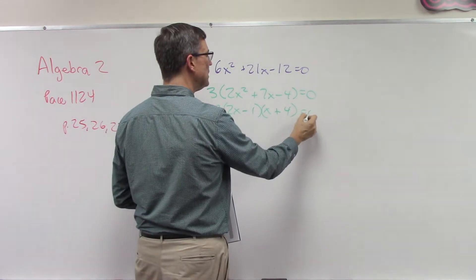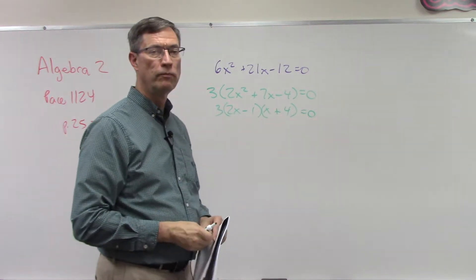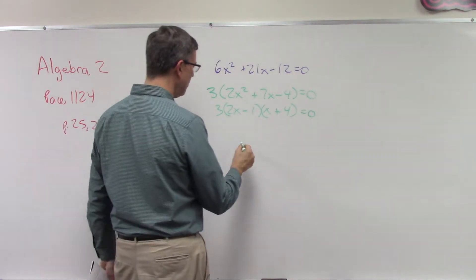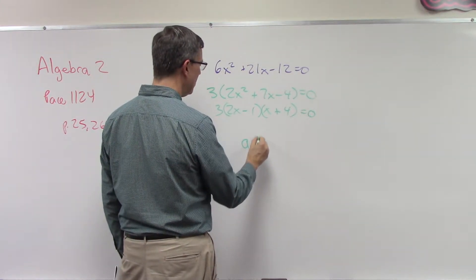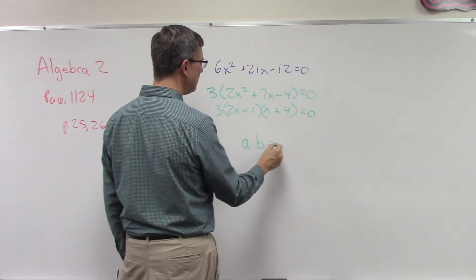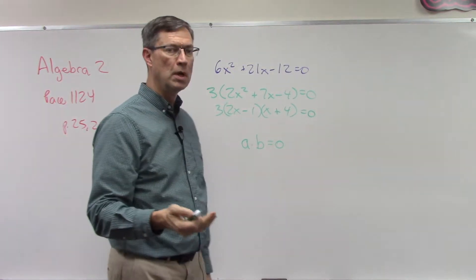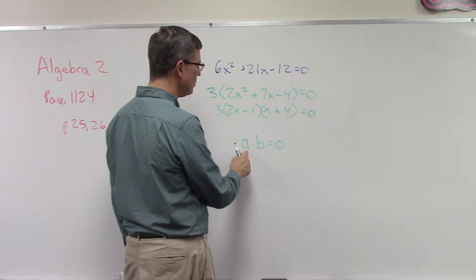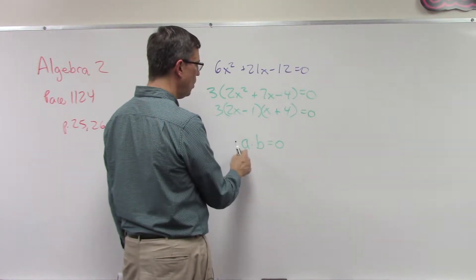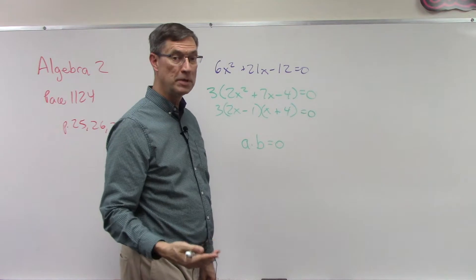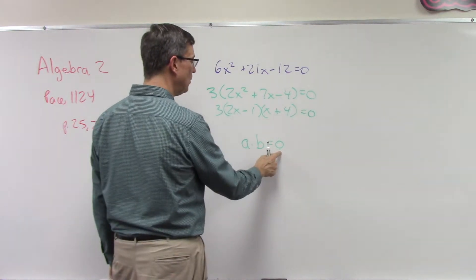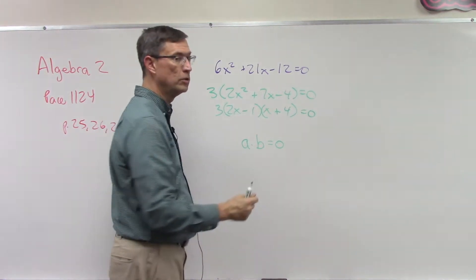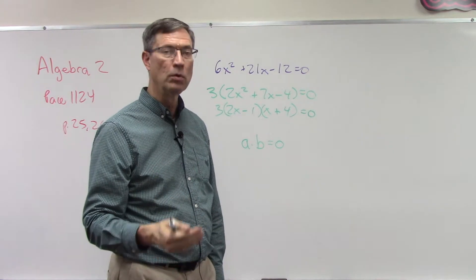Notice this says equals 0, and maybe remember this from some other math we've talked about before. If I have two variables like a times b equals 0, what do you know? Either a has to be 0, and 0 times anything is 0, or I could have this be any number and b be 0. But the only way I can get 0 is for one of these two factors to actually equal or be 0.